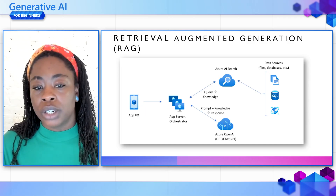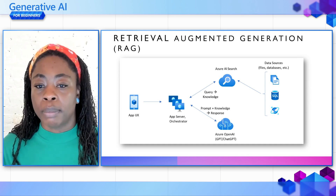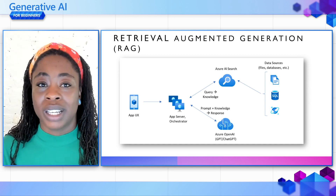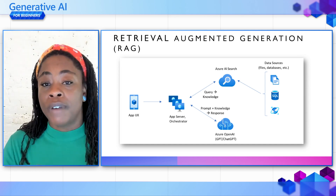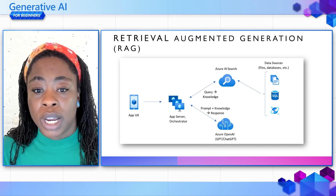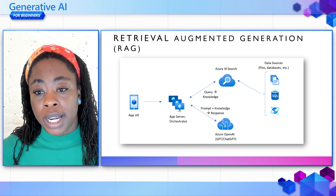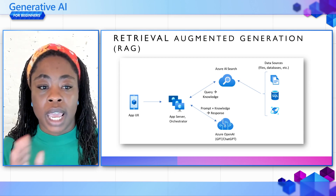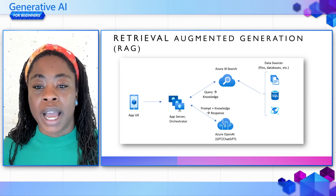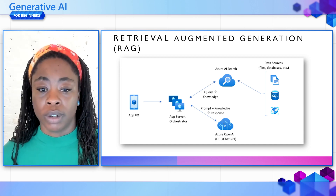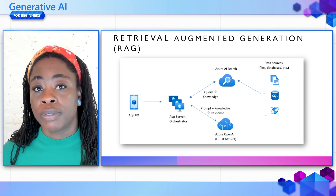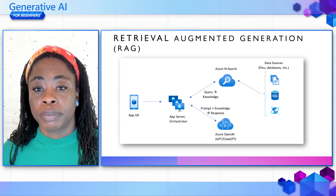Azure AI Search provides inputs to the LLM prompt but doesn't actually train the model — and this is really where RAG deviates from fine-tuning. In RAG architecture, there's no extra training. The LLM is pre-trained using public data and generates responses that are augmented by information from the retriever. You can learn more about this pattern in Chapter 15 of the curriculum.